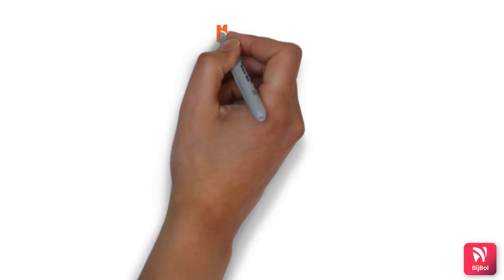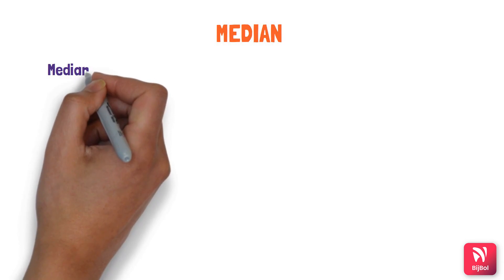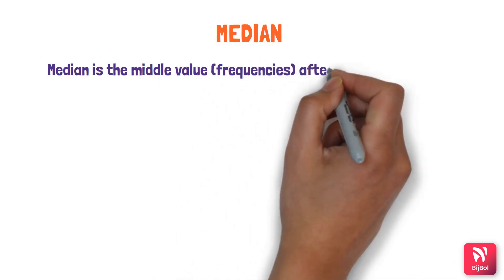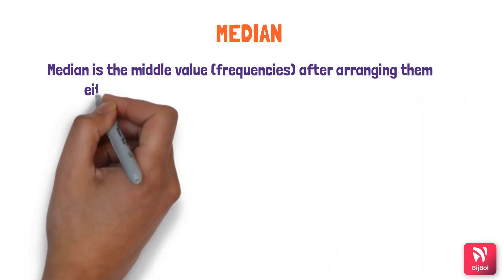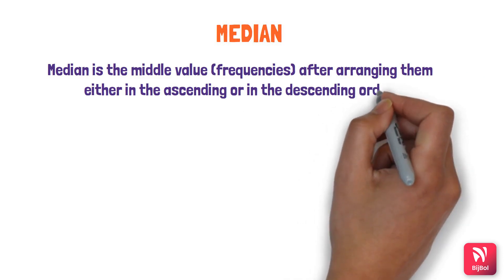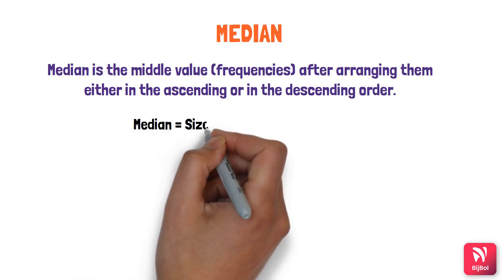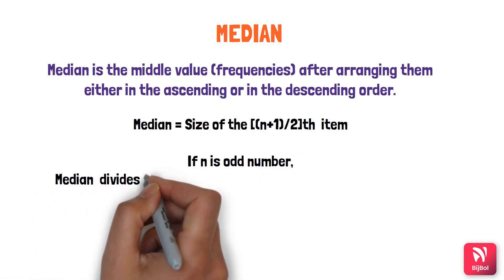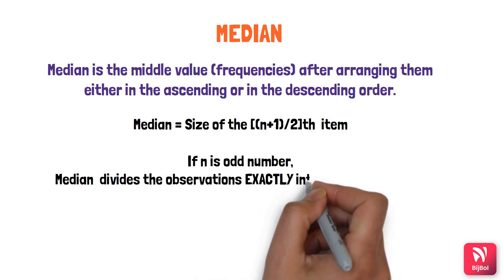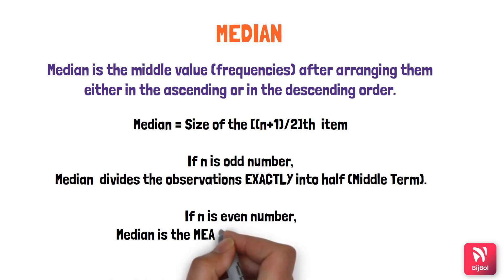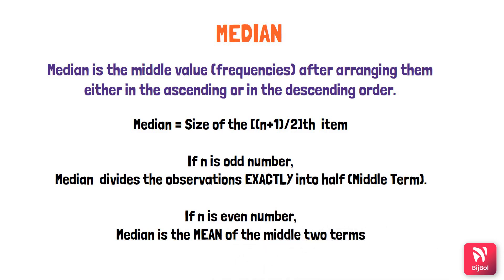The next measure is the median, which is the middle value after arranging observations in ascending or descending order. The median is the size of the (N+1)/2 th item. If N is an odd number, the median divides observations exactly in half — the exact middle one. If N is even, the median is the mean of the two middle terms.